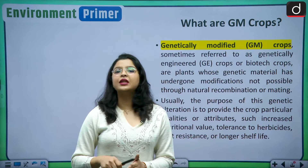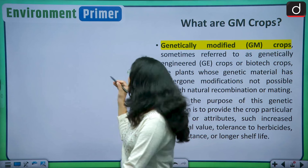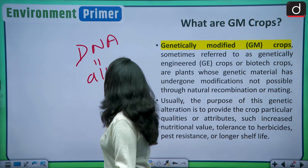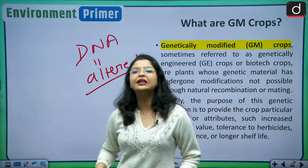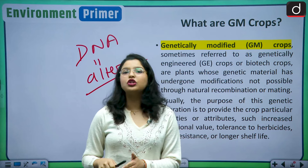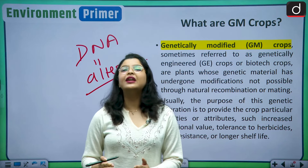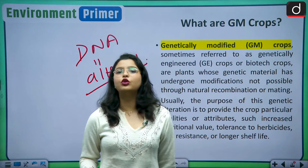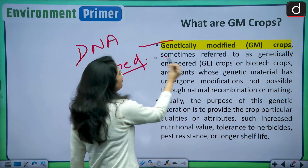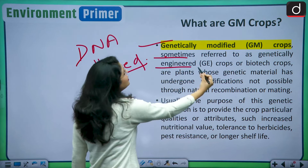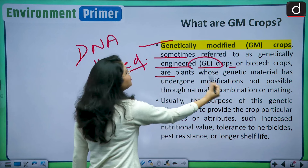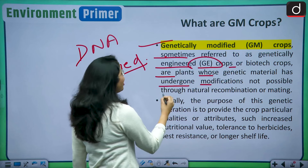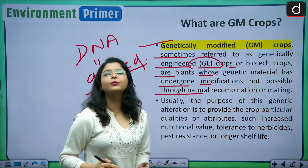This brings us to the key question: what exactly are GM crops or genetically modified crops? Basically, these are plants, animals or microorganisms in which DNA has been altered using techniques such as genetic engineering and biotechnology, so that we can achieve some desirable traits in those plants, animals or microorganisms.